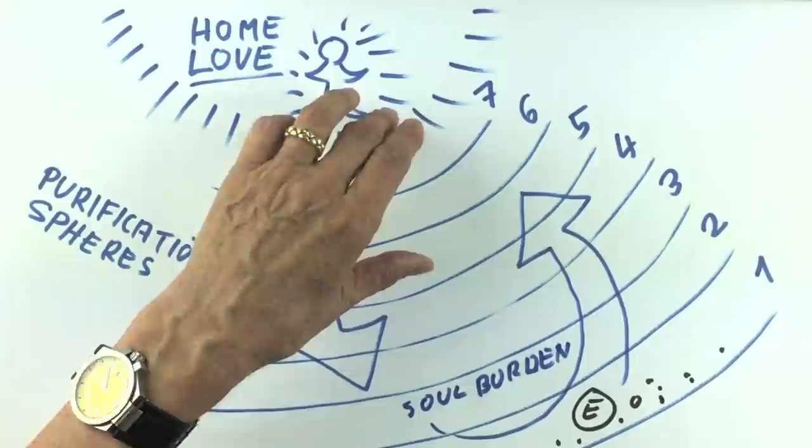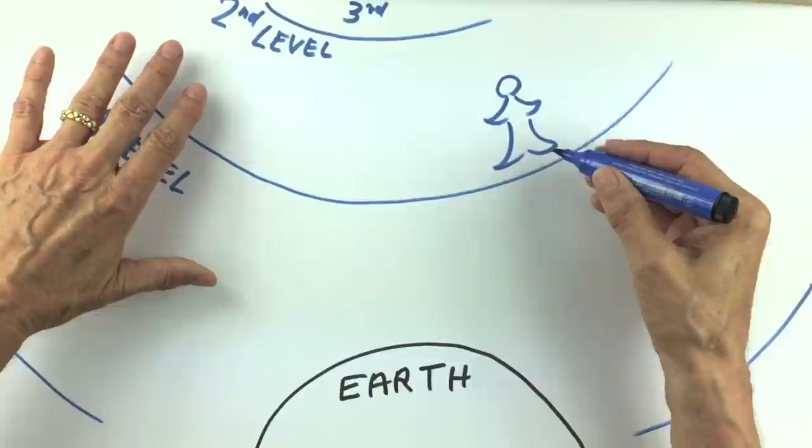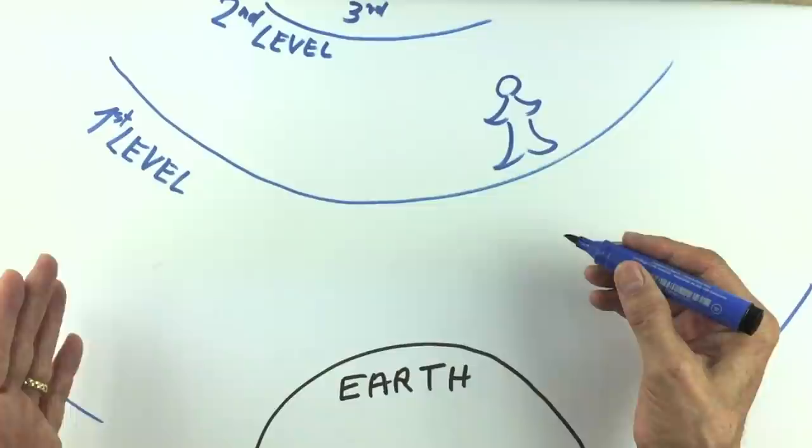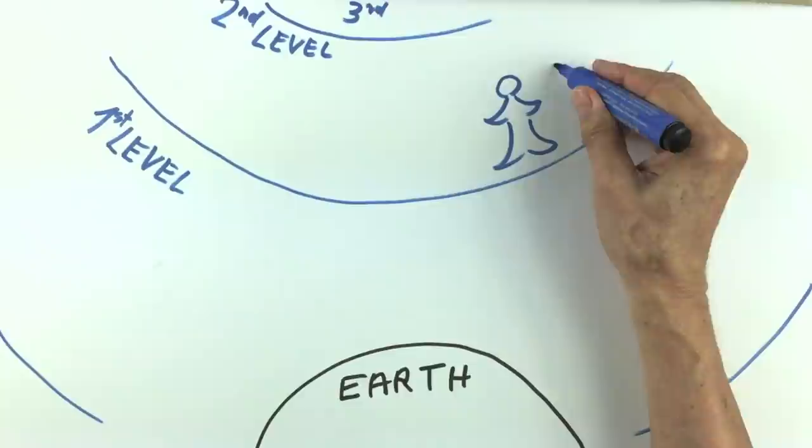So, for our example, let us assume that our burdened soul has the development and vibration that still matches let's say the second level of these spiritual purification spheres. Life on this spiritual level does not appear all that different to life here on Earth.